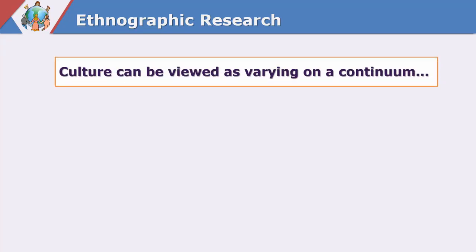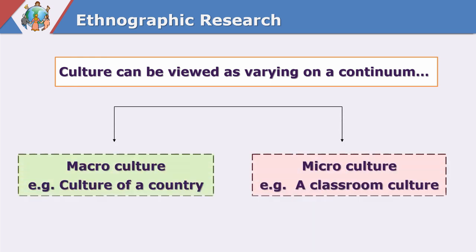Culture can be viewed as varying on a continuum — culture can be a macro culture or a micro culture. When we plan to study all beliefs, standards, norms, language, and values of an entire country, that is a macro culture. Interestingly, a small classroom also has its own culture. All students of that classroom share some common values and beliefs and may have their own code language. If we study one small classroom — their language, their style, their thinking — then it is a study of a micro culture. Right from country to classroom, there is a continuum.